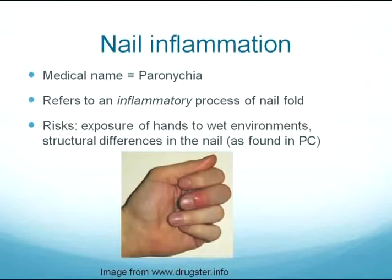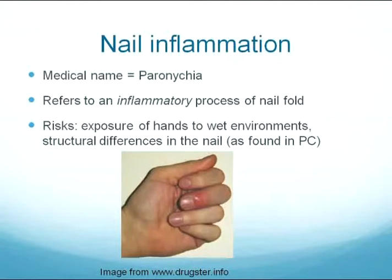The next type of nail process I'm going to talk about is nail inflammation. The medical name for this is paronychia. Paronychia refers to an inflammatory process of the nail fold — the skin that lies adjacent to the nail. By being an inflammatory process, it may be related to an infection or it may be related to something else, from trauma to other causes. Risks include people with frequent exposure of their hands to wet environments, like bartenders, waitresses, or someone who's washing dishes a lot. Another risk factor, which relates to pachyonychia congenita, is structural differences in the nails, which can increase the risk of getting the inflammation of a paronychia.